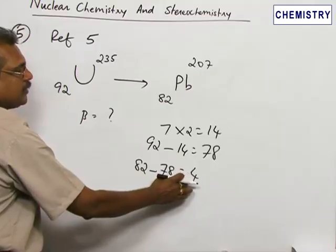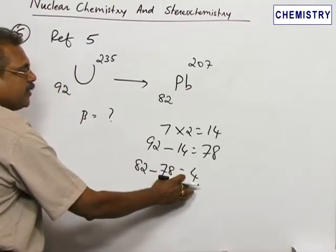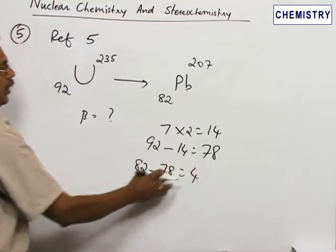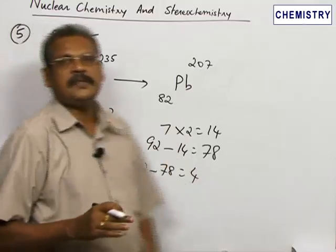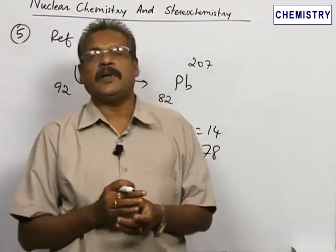Since 4 beta particles are emitted, the atomic number increases by 4 units, from 78 to 82. Therefore, the correct option is 4 beta particles.